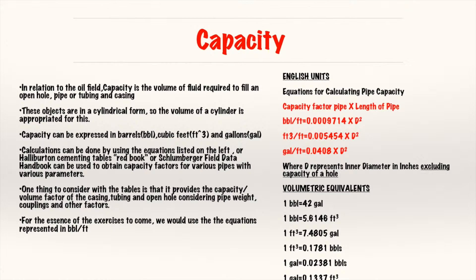For the essence of this exercise we're going to stick with the equation in barrels per foot, which is 0.0009714 times d squared. These are just volumetric equivalents if you ever have to convert from one unit set to the other.